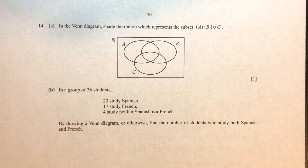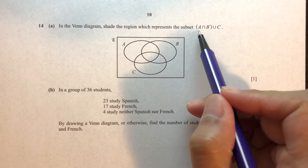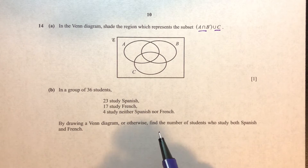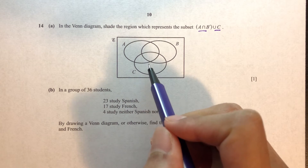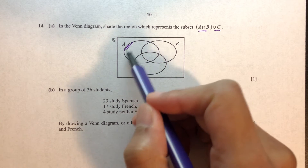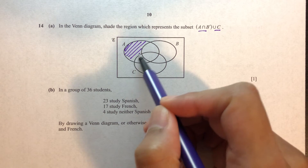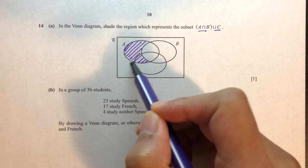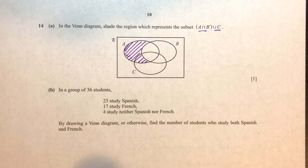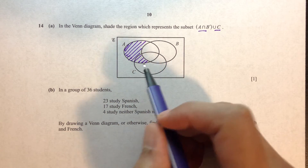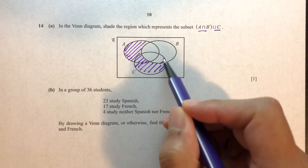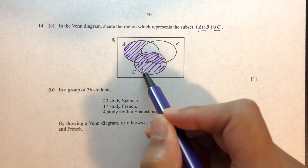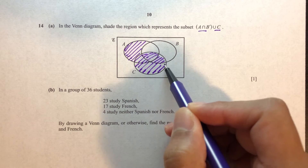Question number 14. In the Venn diagram, shade the region representing the subset. For A intersection B complement: A intersect everything outside of B — so it will be the part of A outside of B. Then we union C, so we include the full set C as well. That is the answer for this subset.